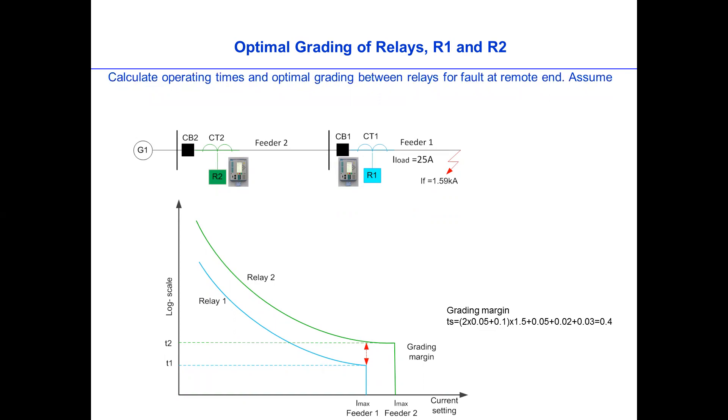How do we calculate the operating time of the relay and optimal grading between the relays for fault at remote end? How do we calculate the trip time of each relay? If we assume that the maximum loading current is 25 Amps, and the CT ratio of each relay is 100 to 5 Amps, meaning that this CT will read 100 Amps primary and 5 Amps in the secondary side.